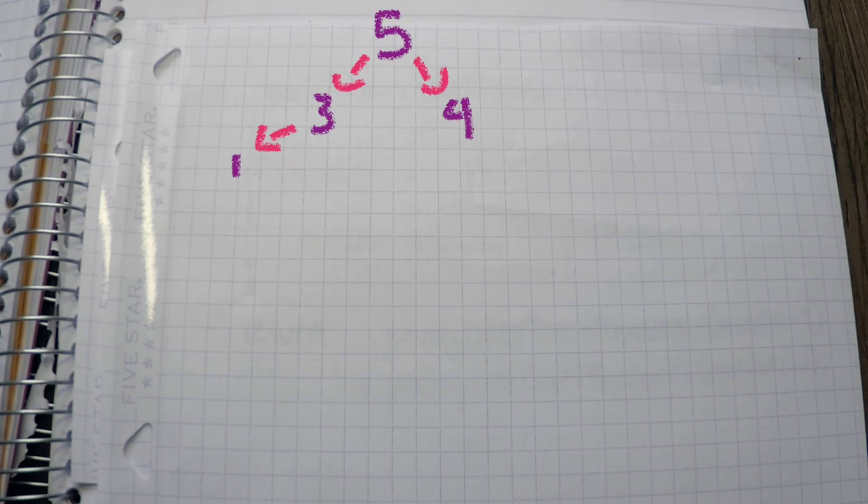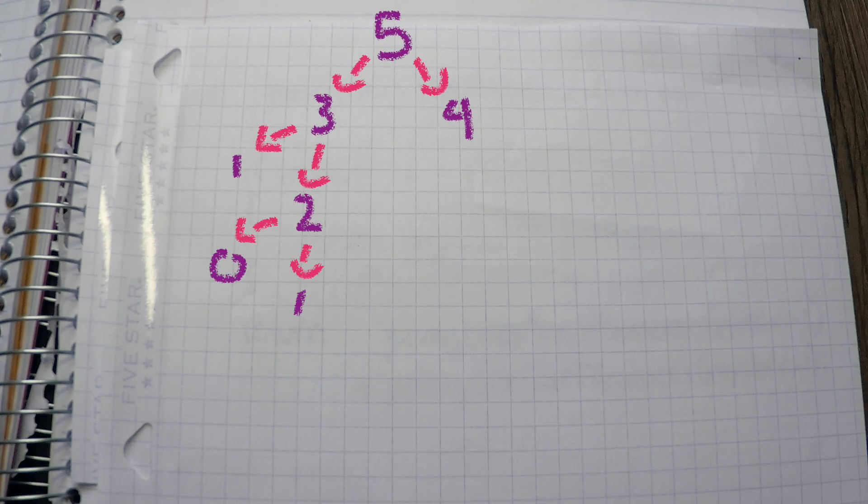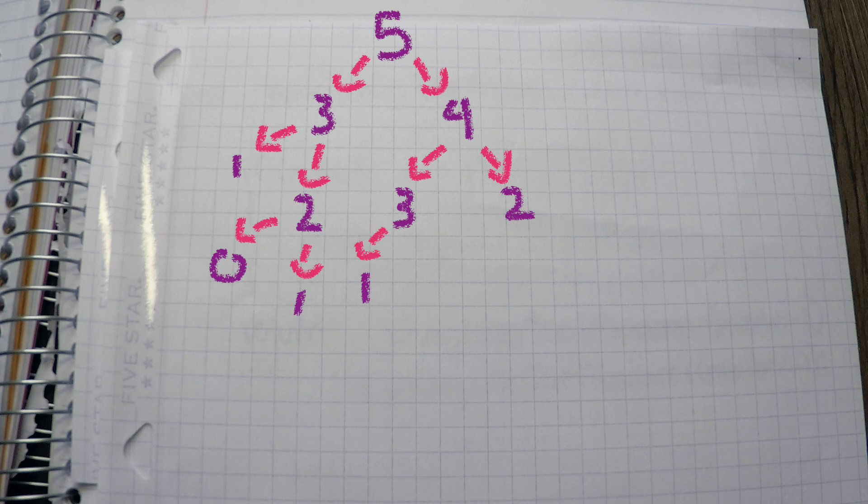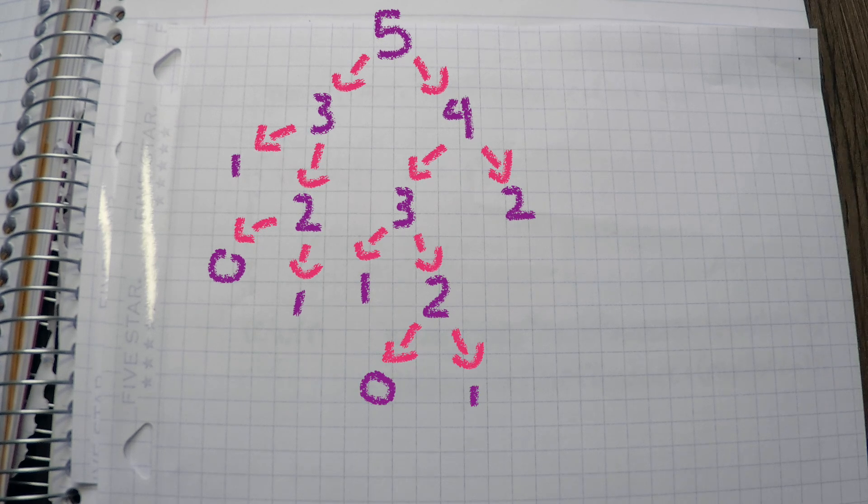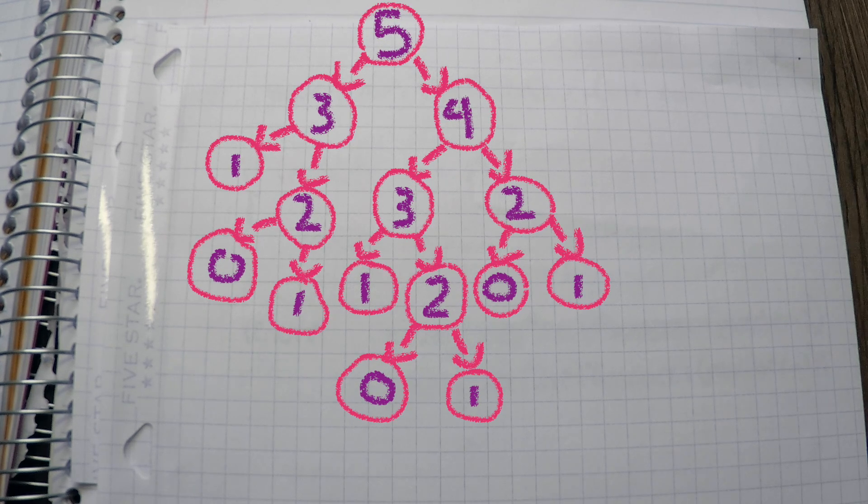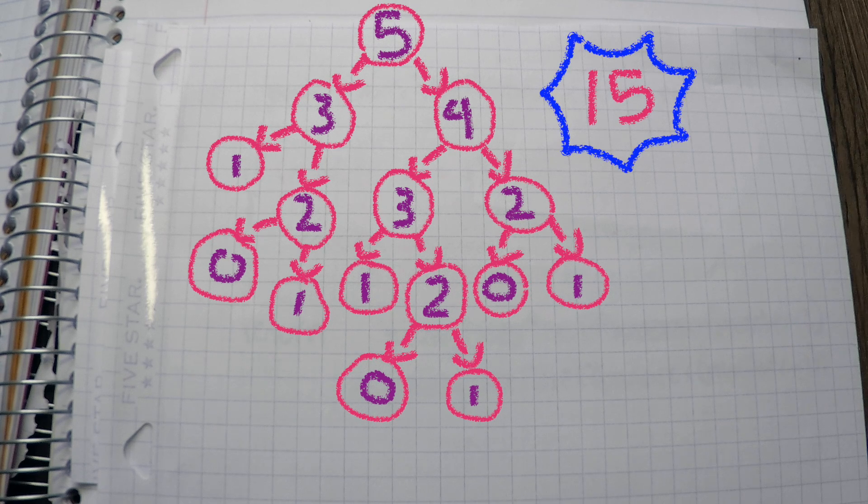For example, if my number is 5, I have to find my two previous Fibonacci numbers, and to find their Fibonacci numbers, I have to find my two previous Fibonacci numbers, and so on until we reach 1 or 0. In this case, we call the function 15 times.